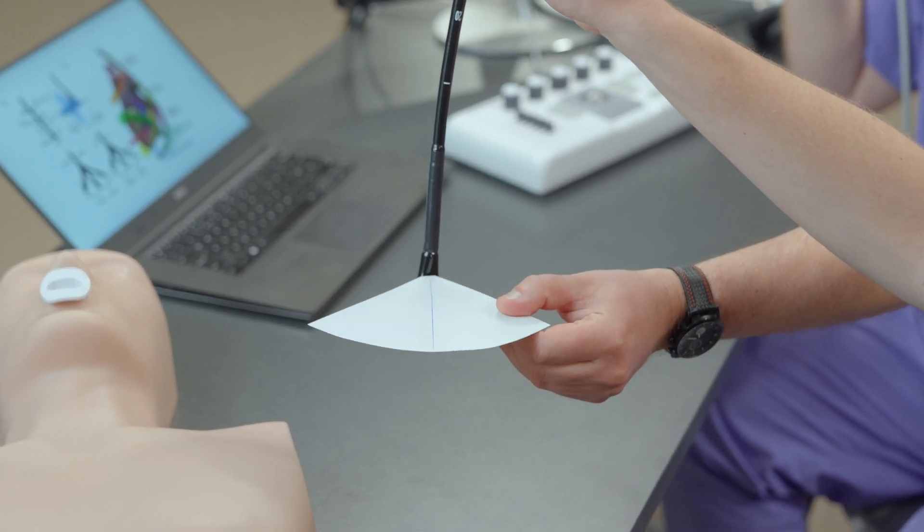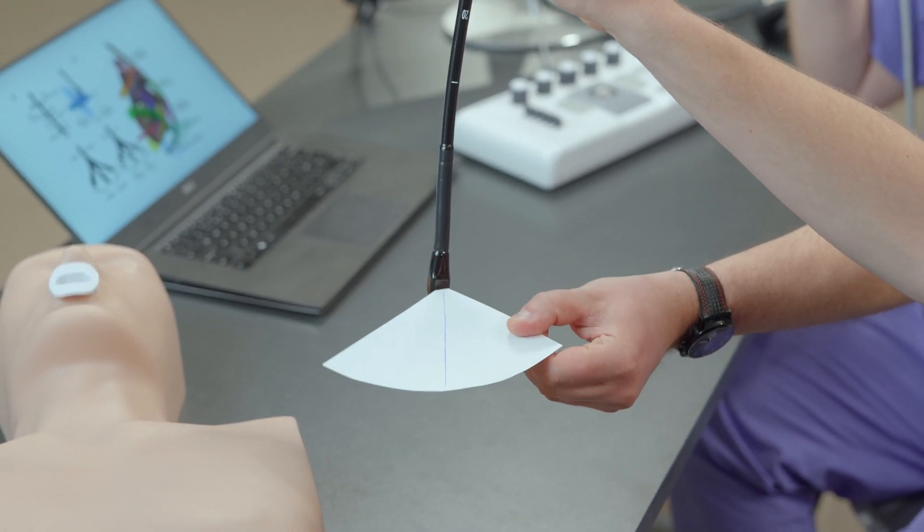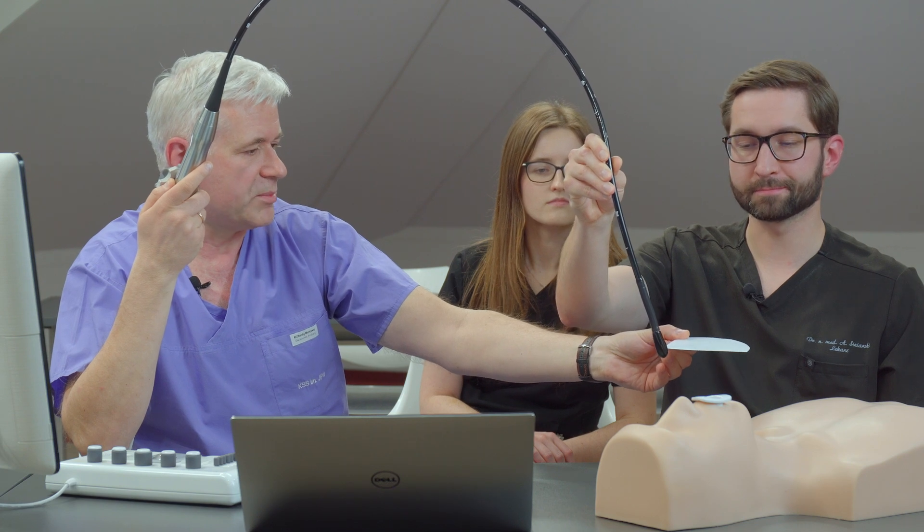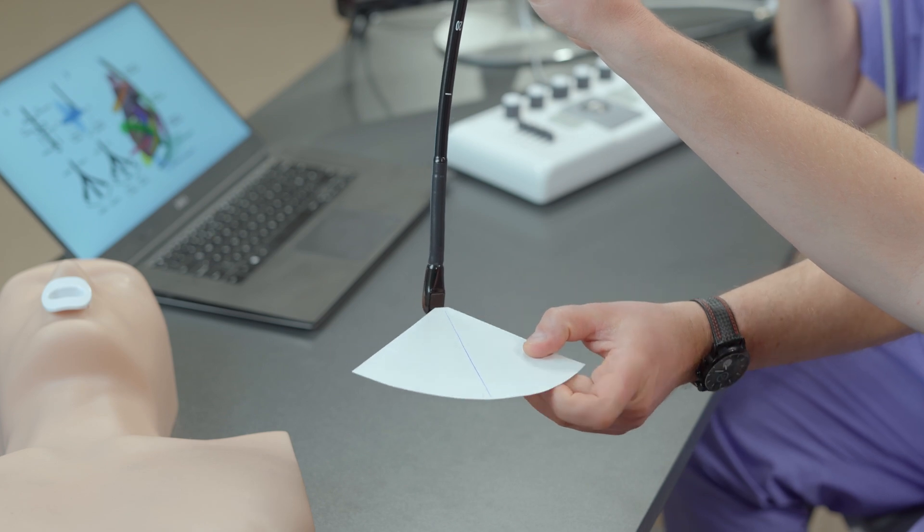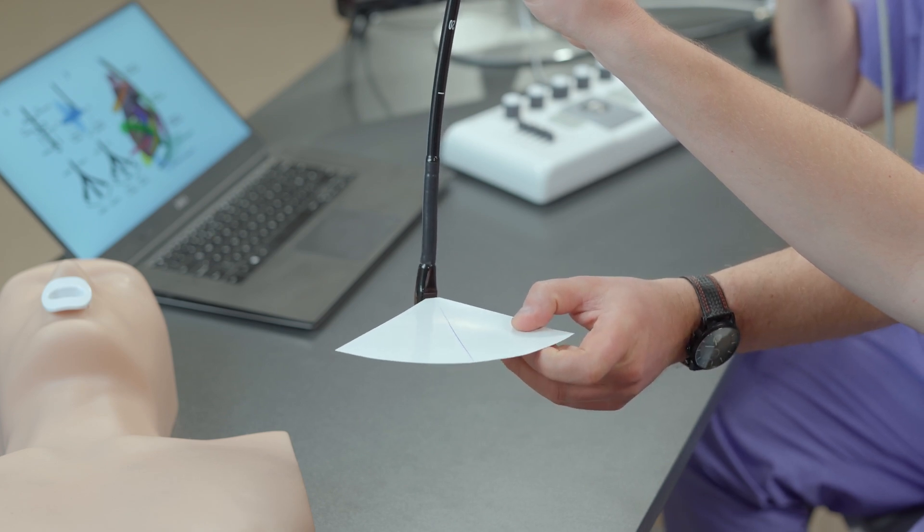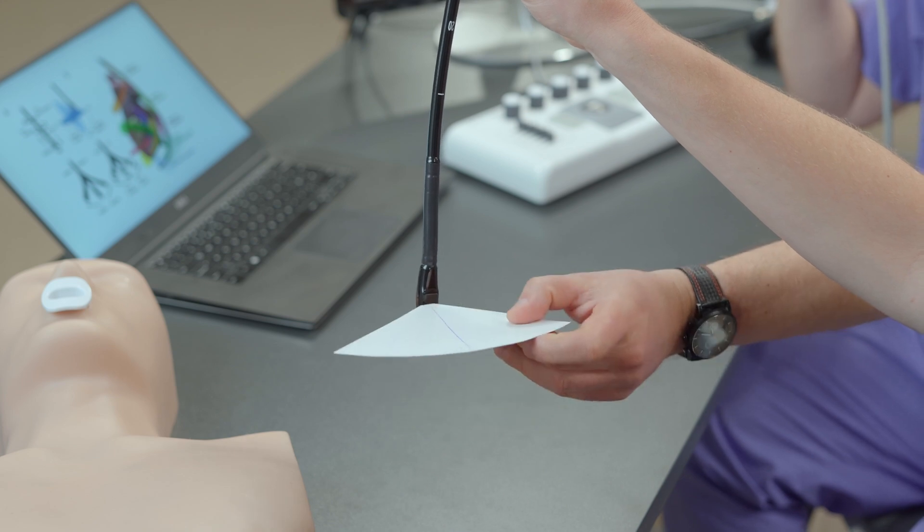This is the representation of the plane that you're going to use during the examination. This is what we call the zero degree view, where the plane is perpendicular to the long axis of the esophagus.